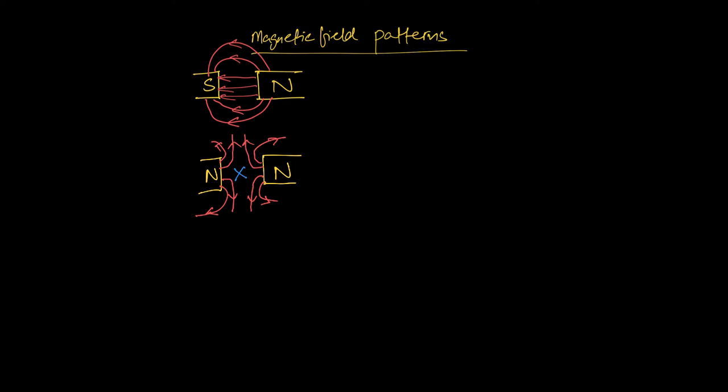X is what we call the neutral point. It's a point where there is no resultant magnetic field because the two fields are equal in magnitude but opposite in direction.